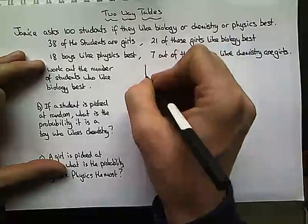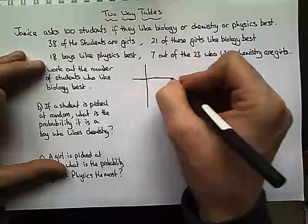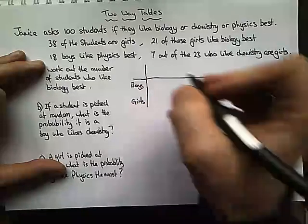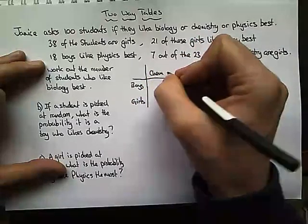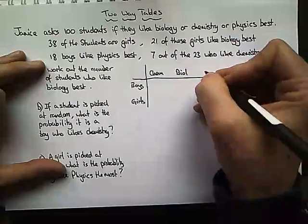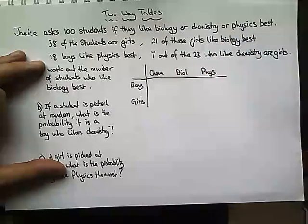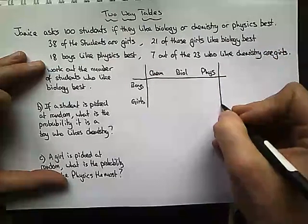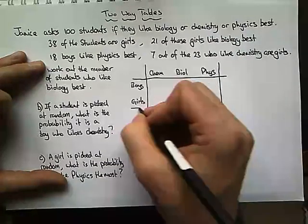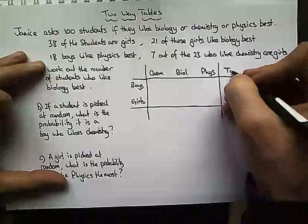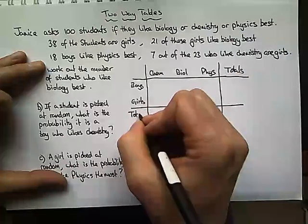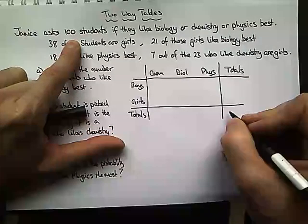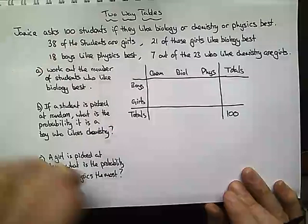I'm going to draw up a table. We're going to have boys and girls as columns, and chemistry, biology, and physics as rows — these are the subject preferences. At the ends of these rows and columns we're going to have totals, because right at the very beginning Janice asked 100 students, so in total we've got 100 students. This number in the corner is always the biggest total.